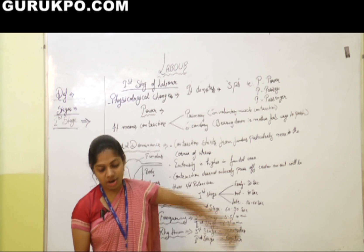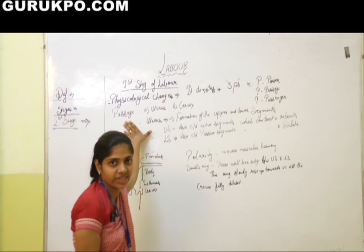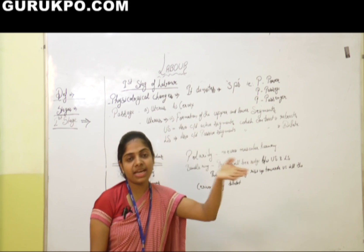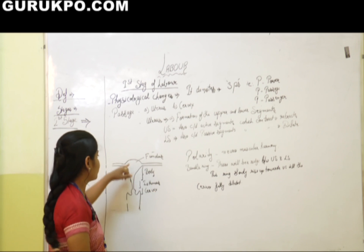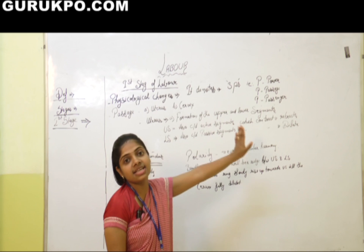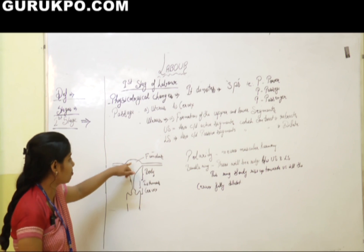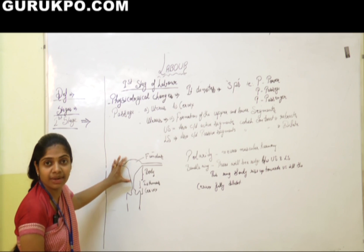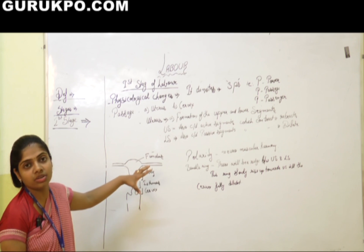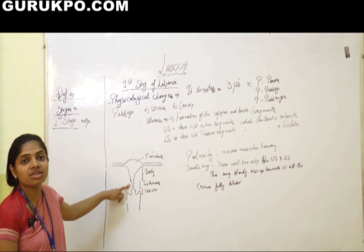Now let's see about the passage. The passage is divided into the uterus and the cervix. In the uterus, there is formation of an upper segment and a lower segment. The upper segment consists of the fundus and body, and the lower segment consists of the isthmus. The upper segment is also known as the active segment because it contracts and retracts throughout labor.